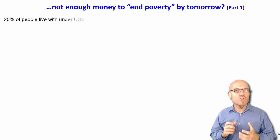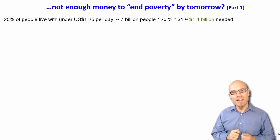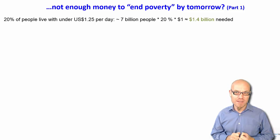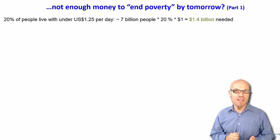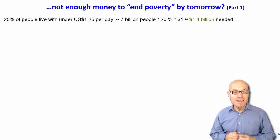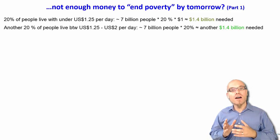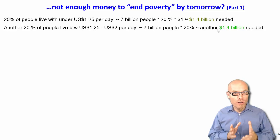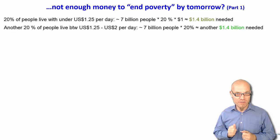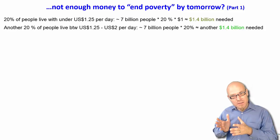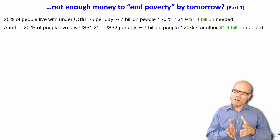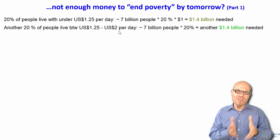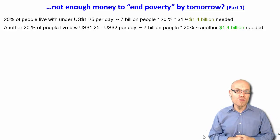The World Bank tells us that 20% of them live with under $1.25 per day, which the World Bank defines as living in extreme poverty. So 7 billion people, 20% of them — that's 1.4 billion people. Then another 20% live between $1.25 and $2 per day, so that's another 1.4 billion. Now if we would give one additional dollar to each of them, that would lift the people in extreme poverty out to the border of poverty, and lift those in simple poverty over the $2 per day poverty line.